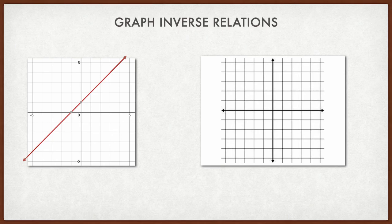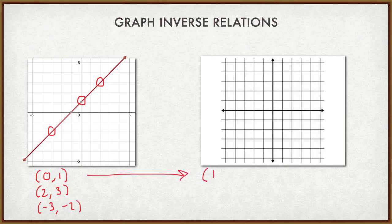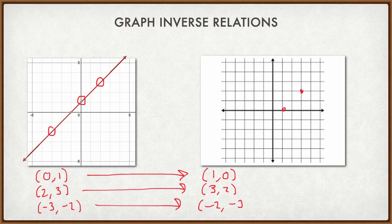I'm going to pick three points off of the first graph. I'm going to pick (0, 1), which is right here. I'm going to pick (2, 3), which is right here. And I'm going to pick (-3, -2), which is down here. Then I reverse my x and y. So my new point is (1, 0), right here. My next inverse point is (3, 2), right here. And (-3, -2) becomes (-2, -3), right here. Then I connect them — and there is my inverse relation, my inverse graph.